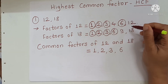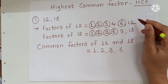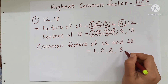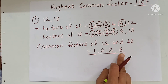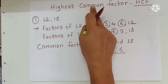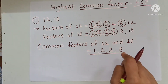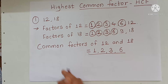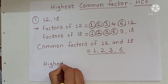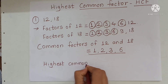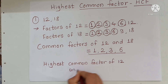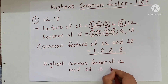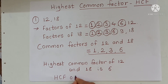Now 6 is the greatest number among all the common factors. The greatest common factor is 6, so this is our highest common factor. So the highest common factor of 12 and 18 is 6. That is, HCF of 12 and 18 is 6.